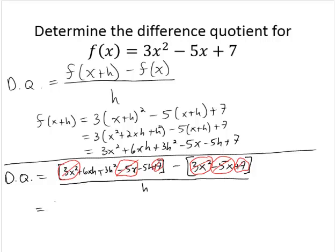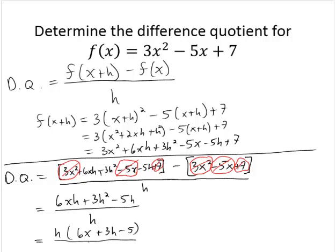So the difference quotient simplifies to (6xh + 3h² - 5h) / h. Notice there's a common factor of h in the numerator, so I can factor it as h(6x + 3h - 5) / h. Since we have a common factor between numerator and denominator, we remove it, giving the difference quotient as 6x + 3h - 5.